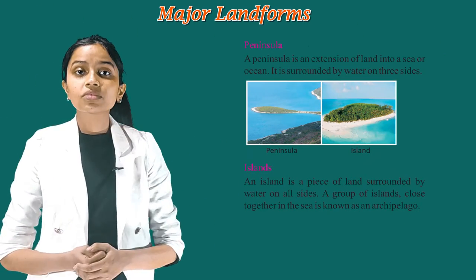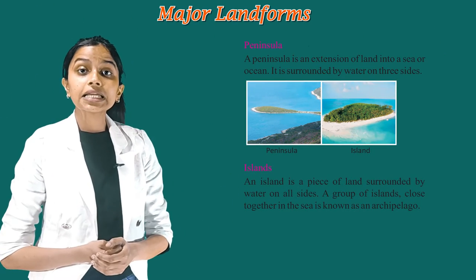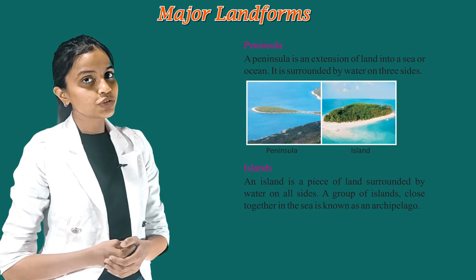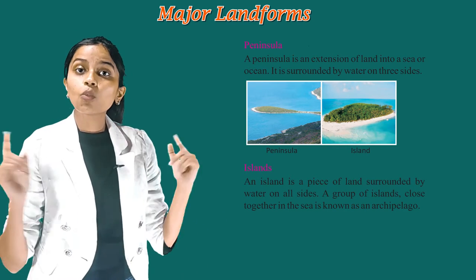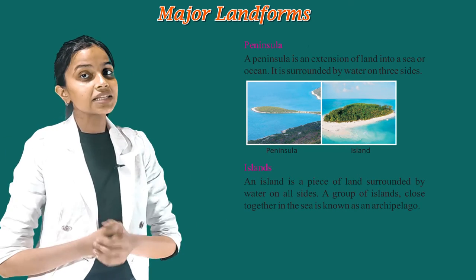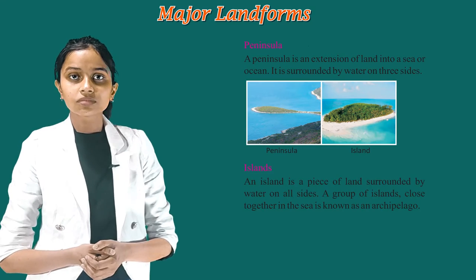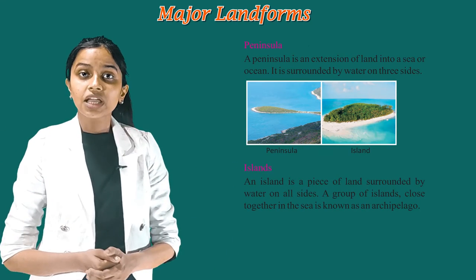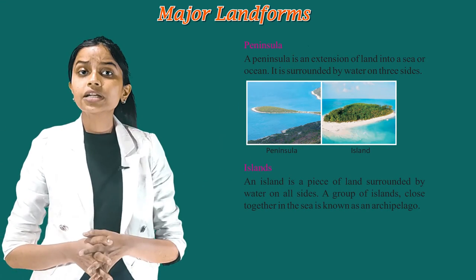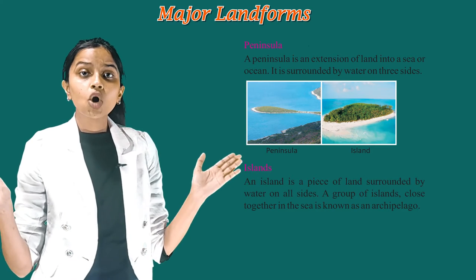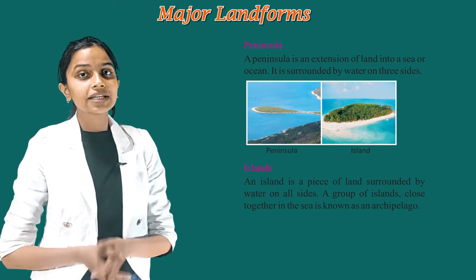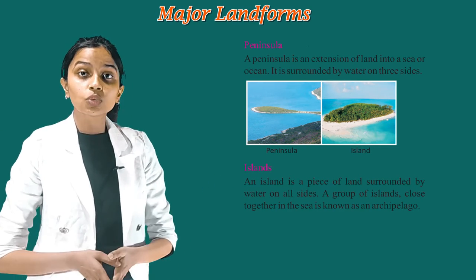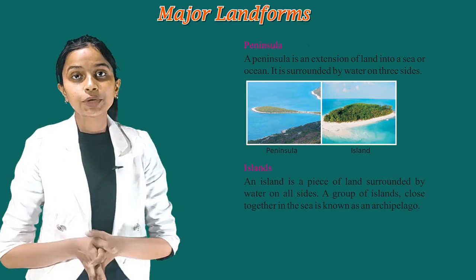Peninsula. A peninsula is an extension of land into a sea or ocean. It is surrounded by water on three sides. Now see what islands are. An island is a piece of land surrounded by water on all sides. A group of islands close together in the sea is known as an archipelago.